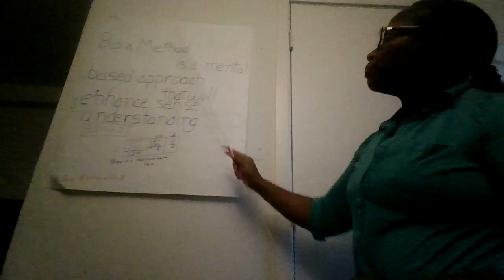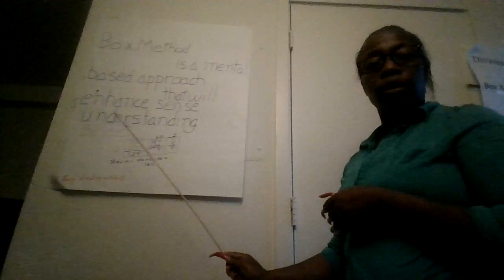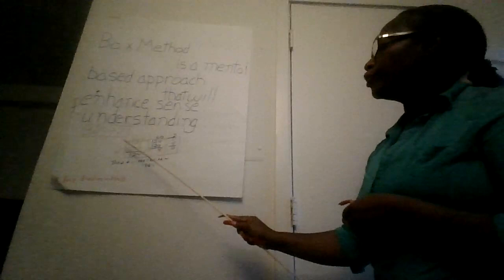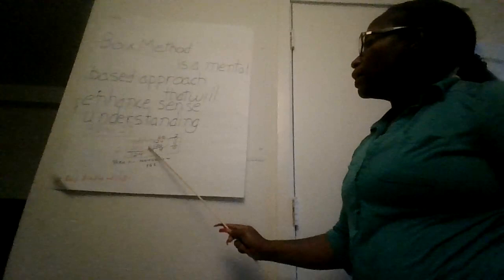The first strategy we'll discuss is the box method. Box method is a mental-based approach that enhances understanding. For example, you have 324 divided by 2. Using the box method, the 2 is on the outside and the numbers you divide into 324 will be on top of the box. You probably cannot see this clearly, but I will show you an example.